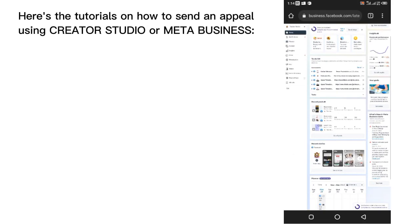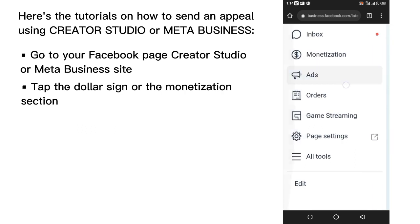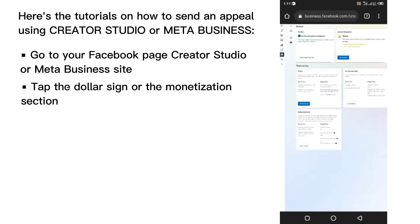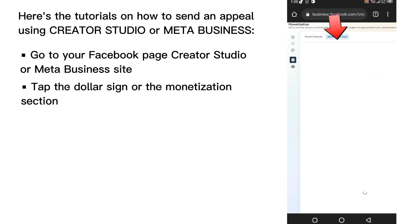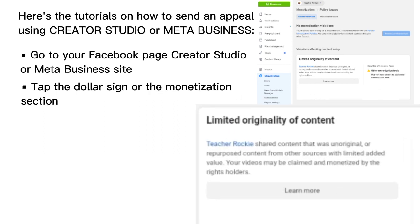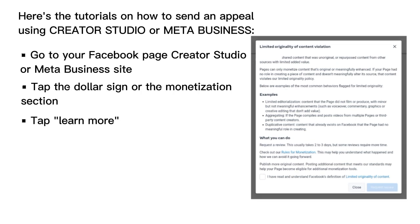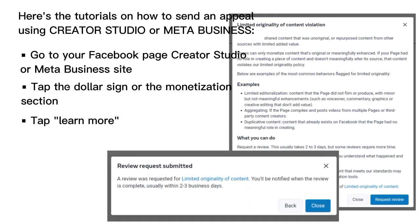Here's the tutorial on how to send an appeal using Creator Studio or Meta Business. First, go to your Facebook page Creator Studio or Meta Business site. Then tap the dollar sign or the monetization section. The screen is small, so I just screenshotted the Facebook notice. As you can see, my Facebook page received a violation for limited originality content. To send an appeal, tap 'Learn More,' then put a checkmark, then tap 'Request Review.' Our appeal is already submitted. We will just wait two to three business days before we know the result of our appeal.